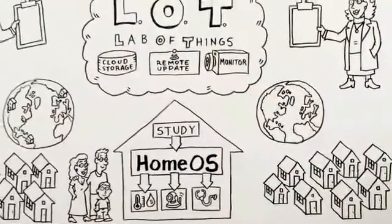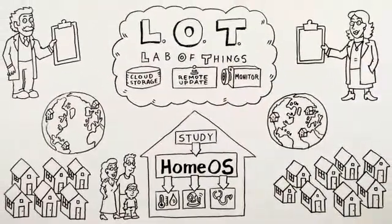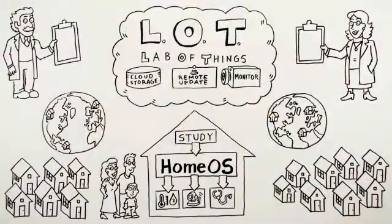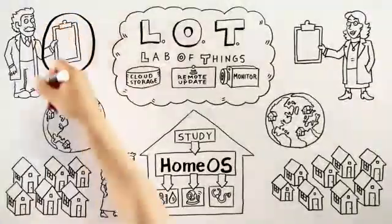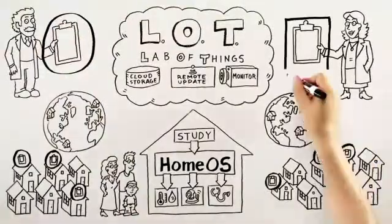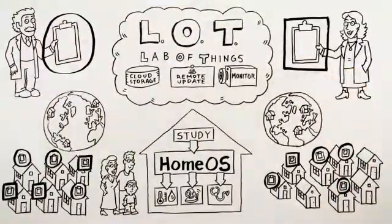Marie realizes that she and Albert have recruited similar participants in different locations. Because they are both using Lab of Things, Albert can deploy his study into houses Marie has recruited, and Marie can deploy her study into some of Albert's houses.